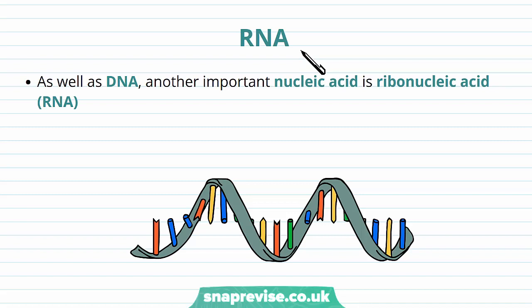As we've said, as well as DNA, another important nucleic acid that you find in cells is ribonucleic acid, or RNA. Remember DNA was named very similarly but slightly different — DNA stood for deoxyribonucleic acid, whereas RNA stands for ribonucleic acid.